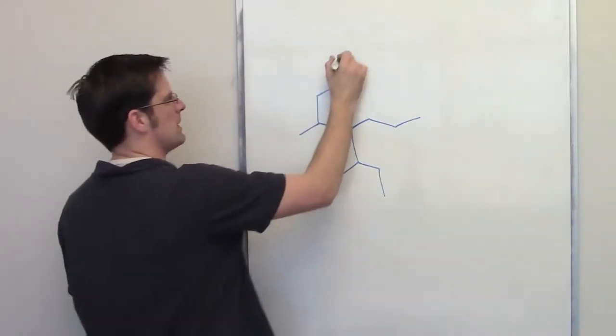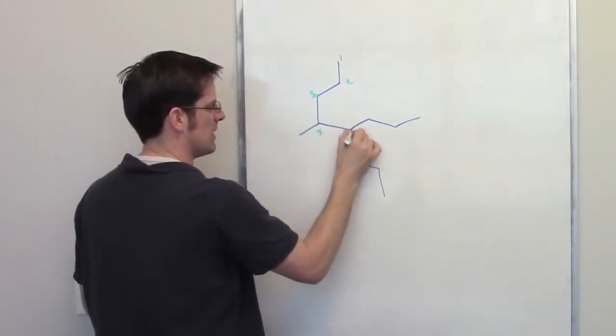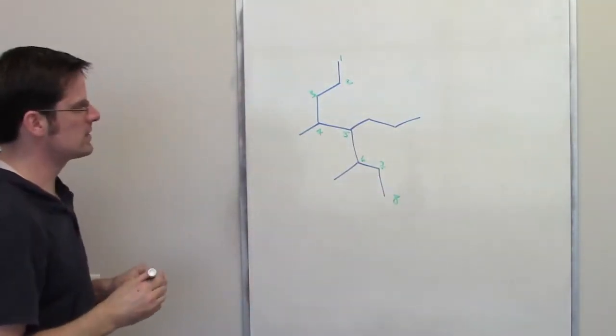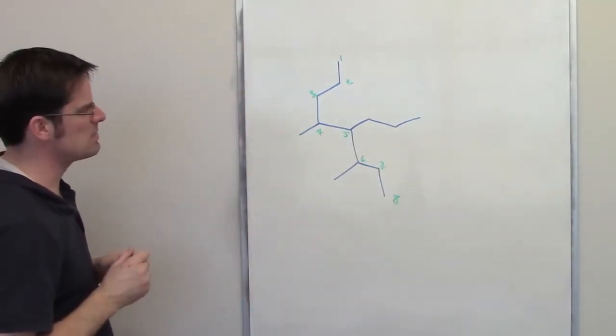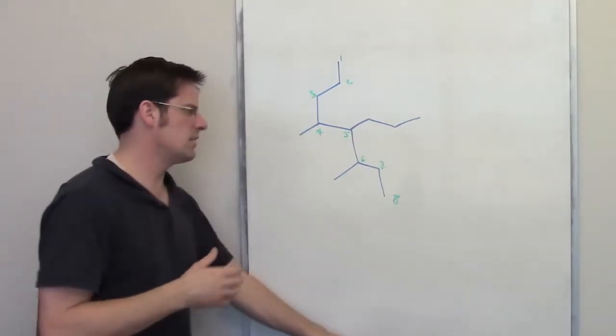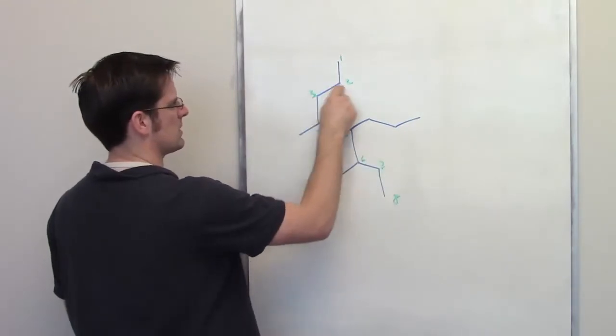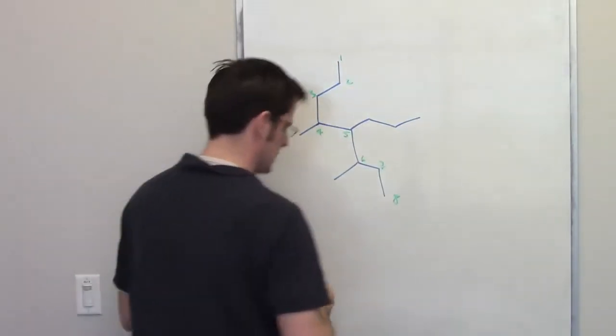What if I start numbering up here? One, two, three, four, five, six, seven, eight. Yeah, that's longer. And as I look at that closely, I don't think I could come up with any different chain that's going to be longer than that. I mean, if I start here, I go one, two, three, four, five, six, seven, eight. Yeah, actually I could do that way.